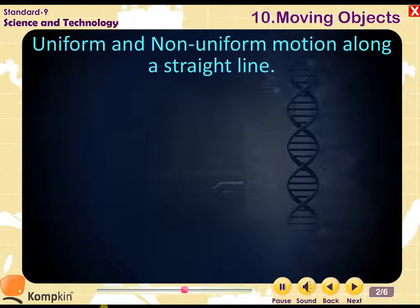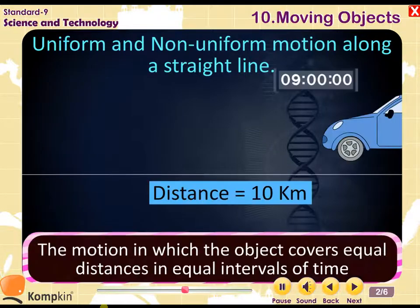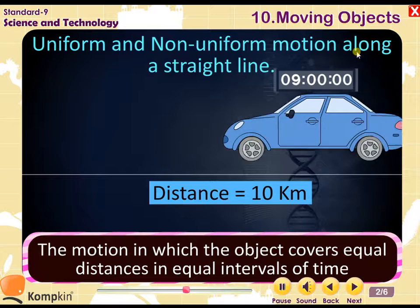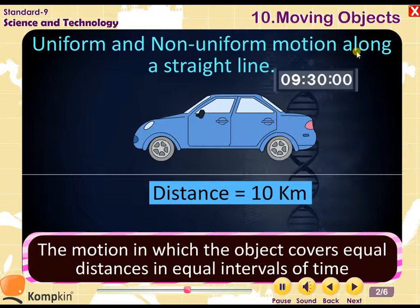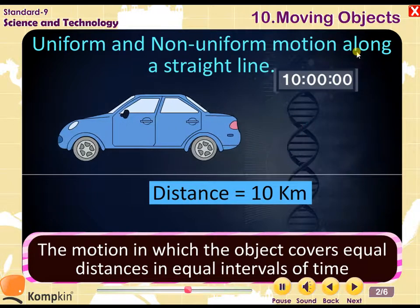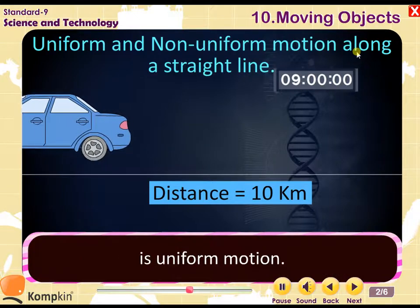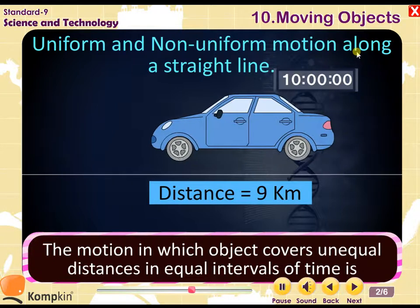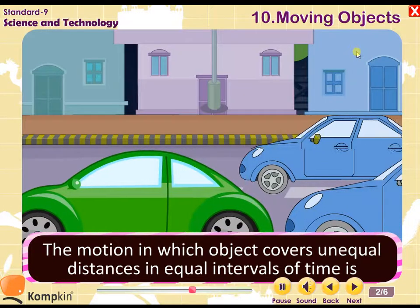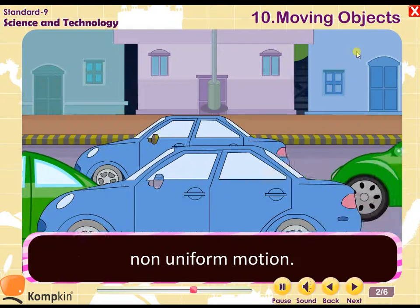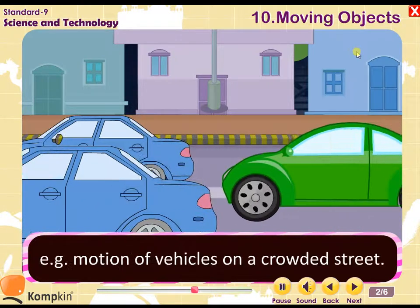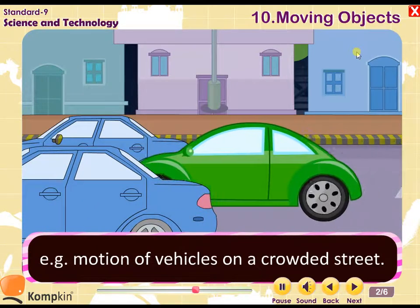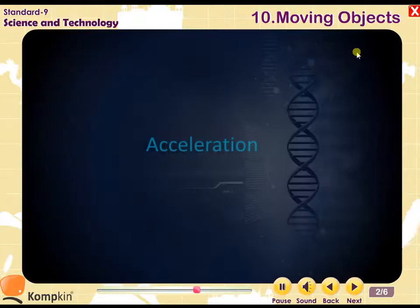Uniform and non-uniform motion along a straight line. The motion in which the object covers equal distances in equal intervals of time is uniform motion. The motion in which the object covers unequal distances in equal intervals of time is non-uniform motion, e.g. motion of vehicles on crowded streets.